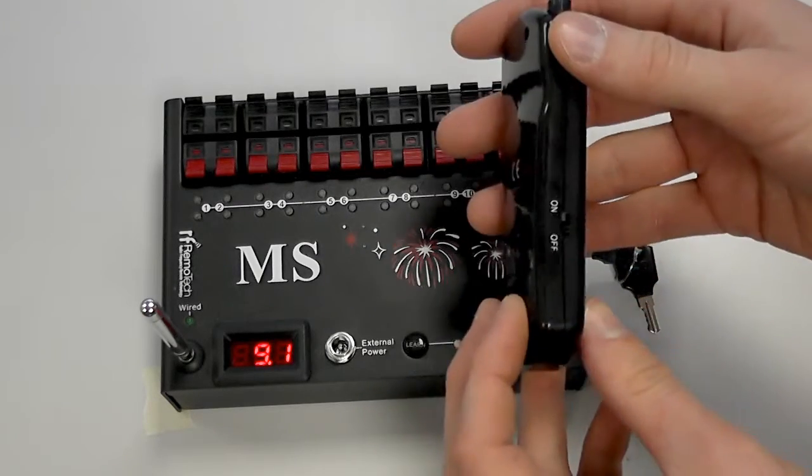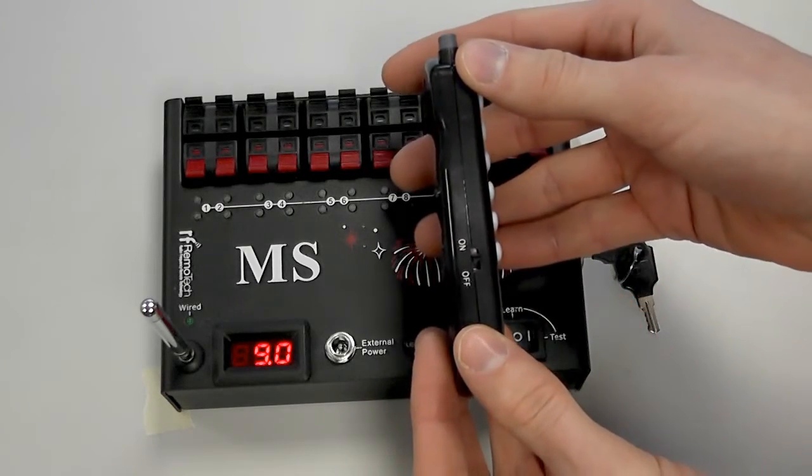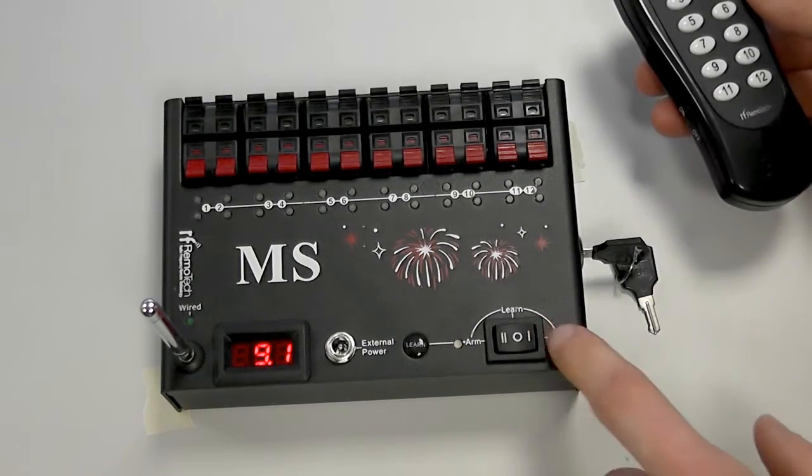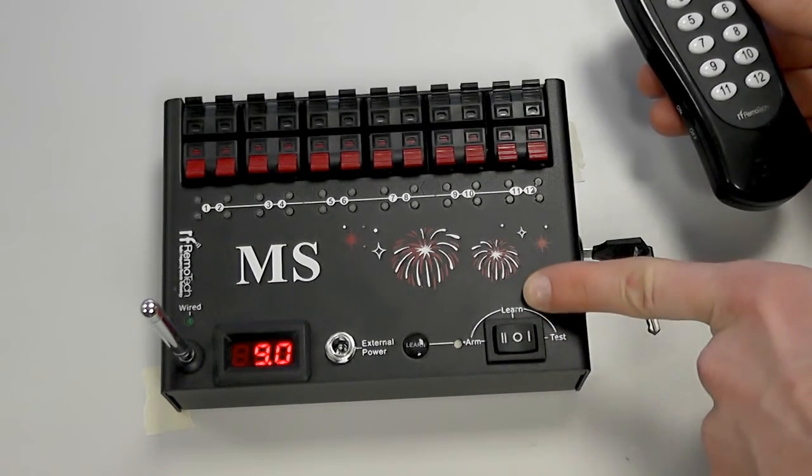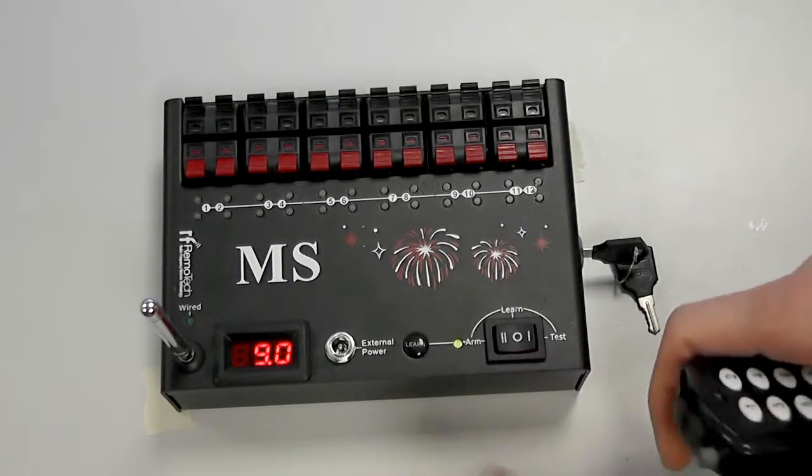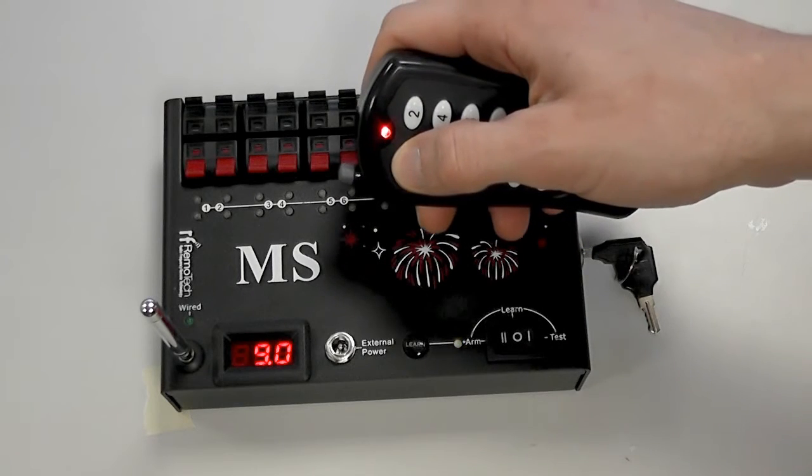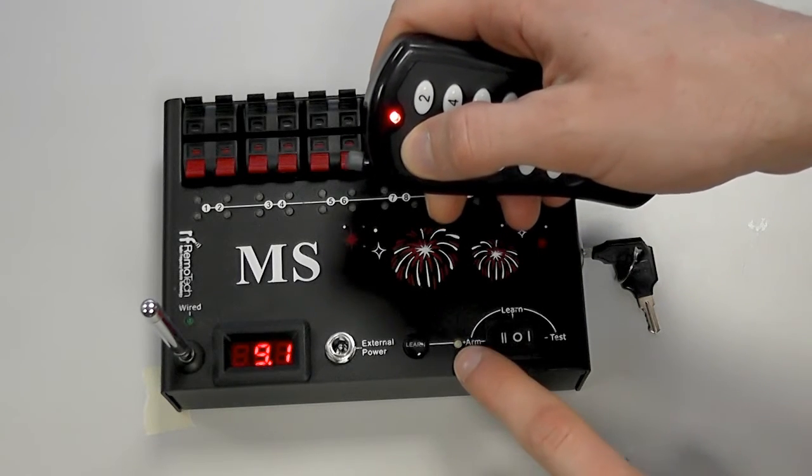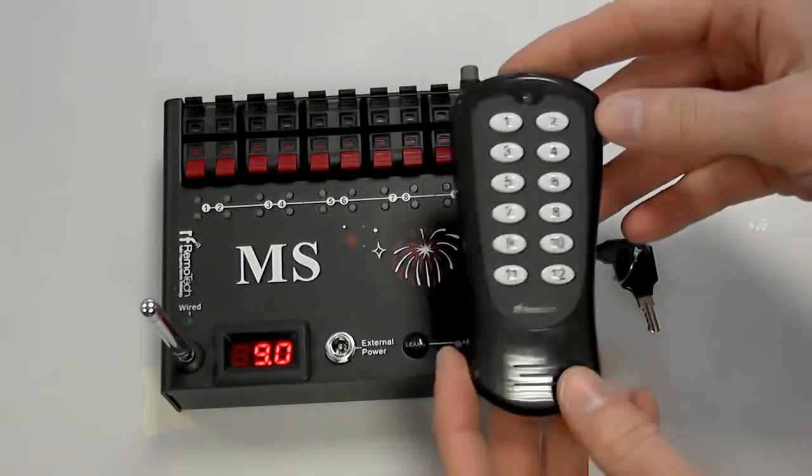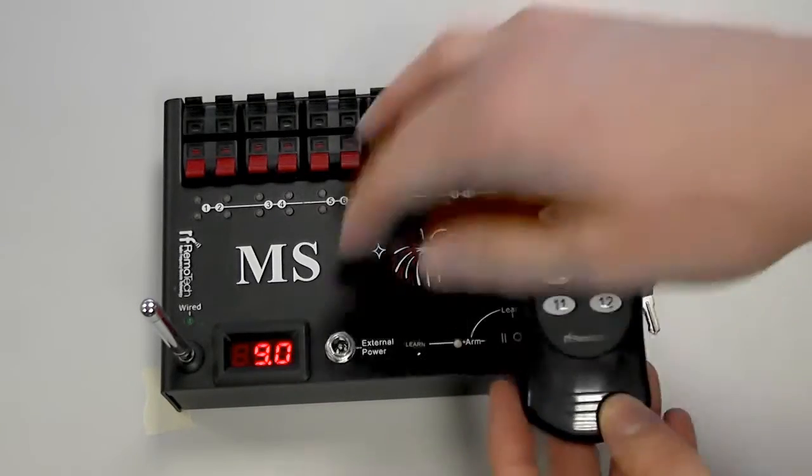So to do this you're just going to turn the remote control on by flicking the power switch up on the side and with the rocker switch in the middle position which is the learn position. Press and hold the learn button until the learn light comes on and then press and hold any button on the remote control and the learn light will blink twice. Now what you've done is you've programmed this remote control to this receiver here.